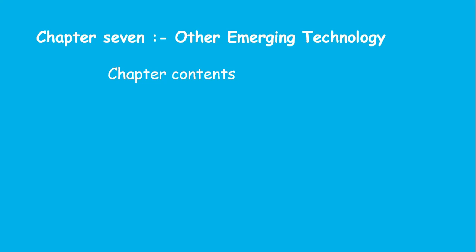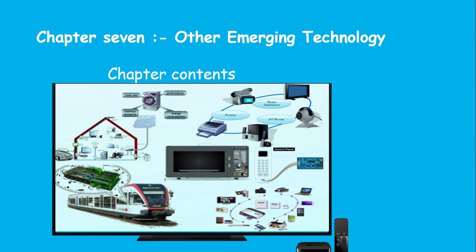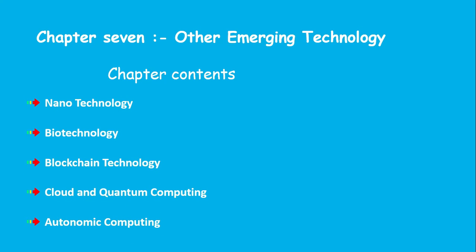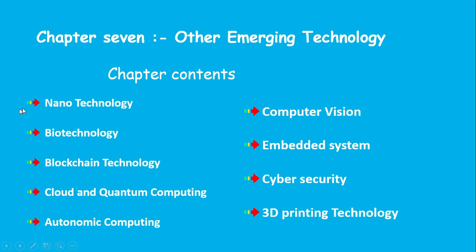Chapter seven covers other emerging technologies. Topics include: Nanotechnology, Biotechnology, Blockchain Technology, Cloud and Quantum Computing, Autonomic Computing, Computer Vision, Embodied Systems, Cyber Security, and 3D Printing.